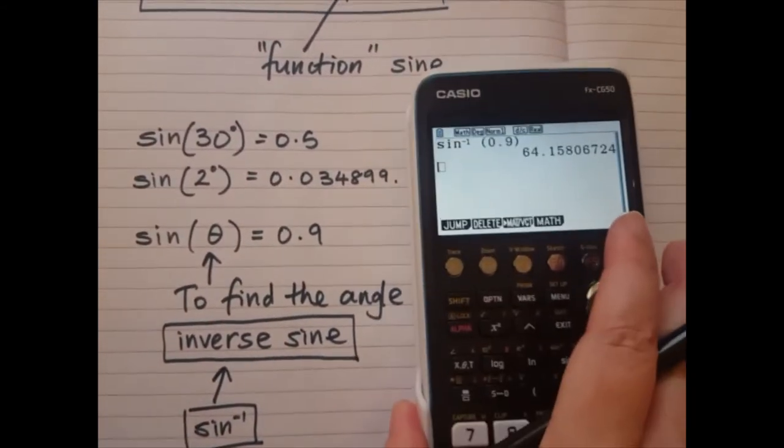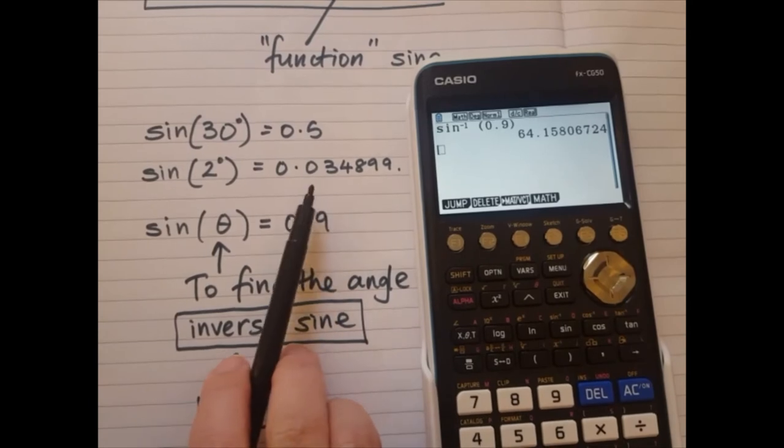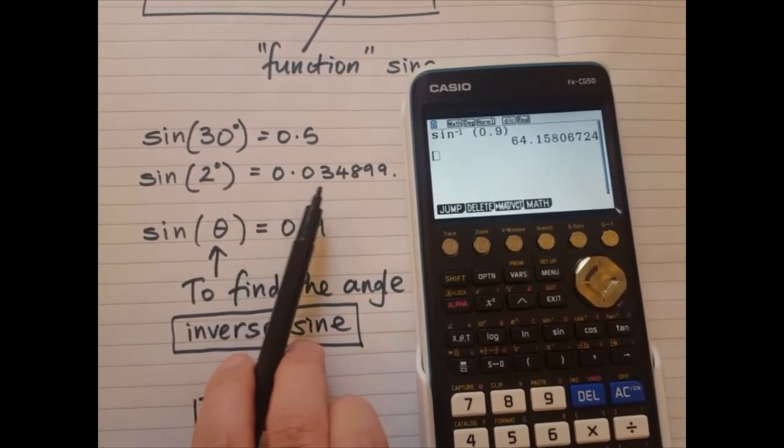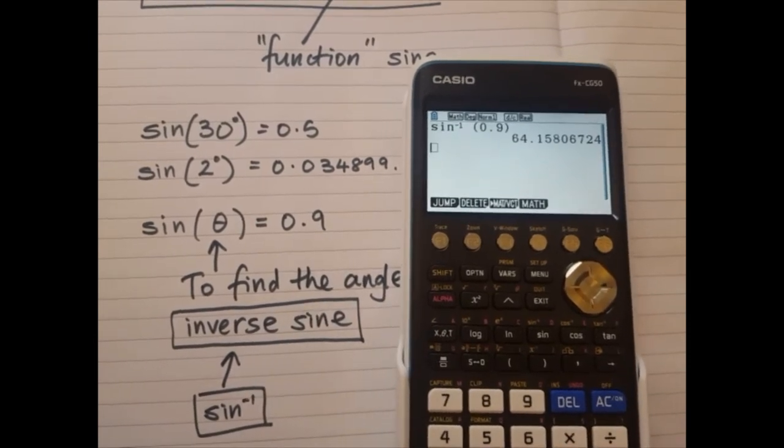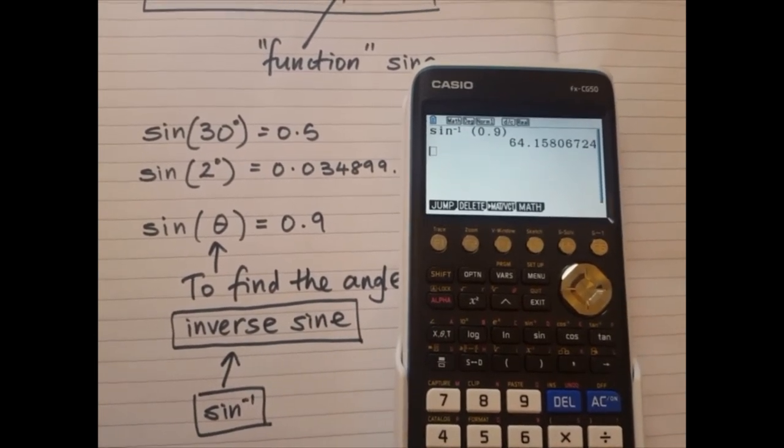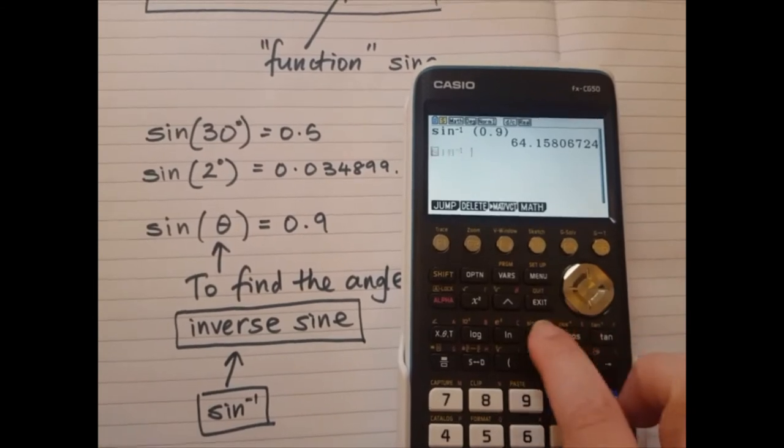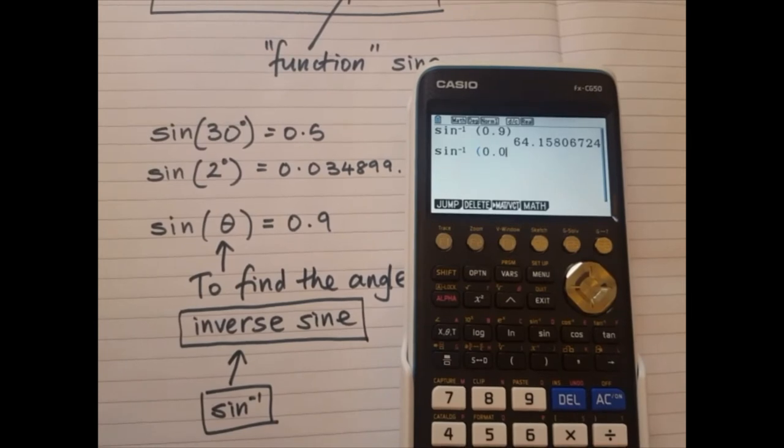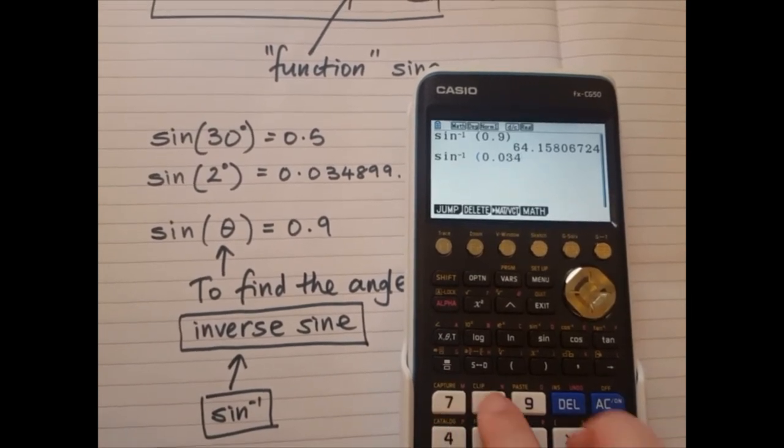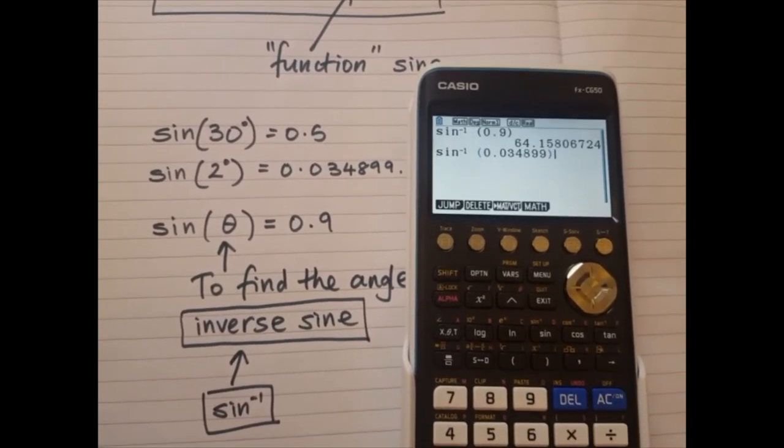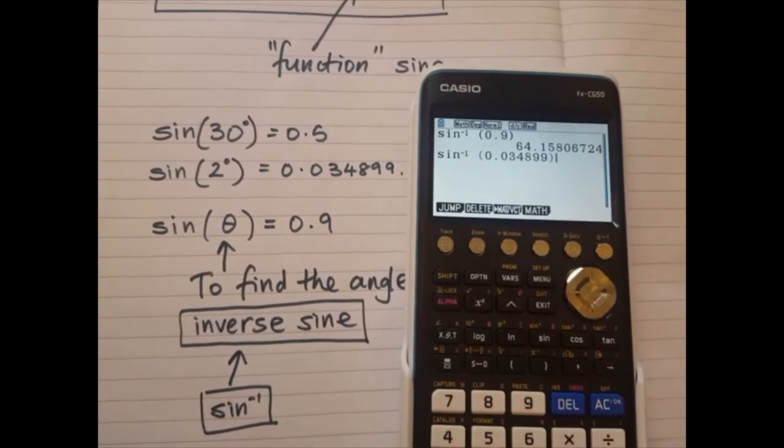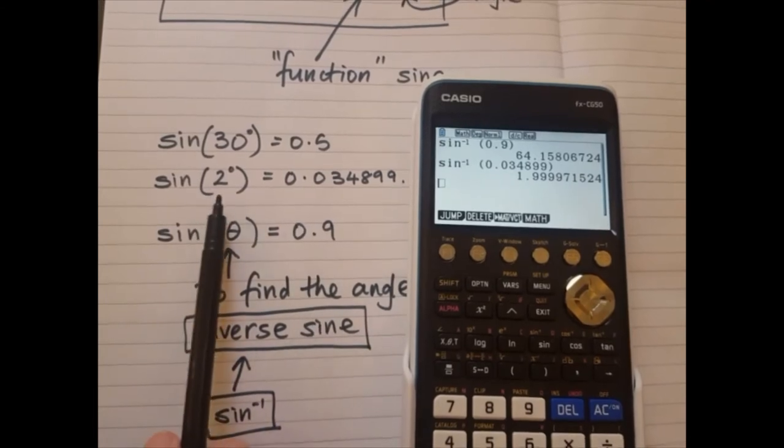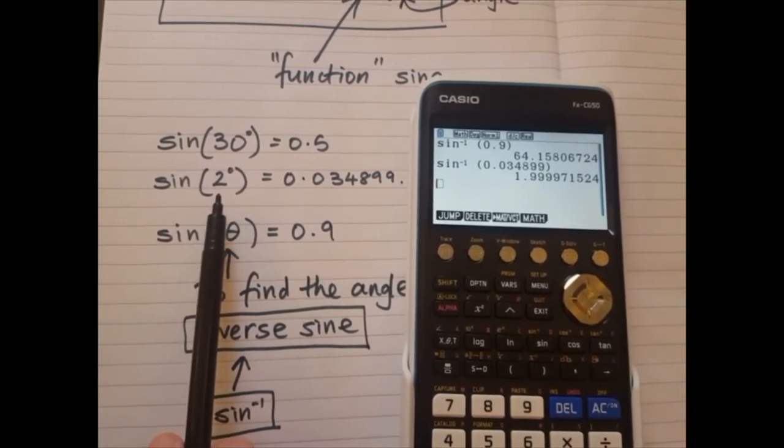Let's see if it works for the other ones. Could I work backwards if I know this answer here, this decimal answer to sine? Could I work backwards to find the angle? Yes. So shift, inverse sine. I'm going to type in the decimal number 0.034899, close bracket. And the answer it gives me should be 2 degrees. Let's see. Yeah, that's basically 2 degrees. I've worked backwards to find the angle here.